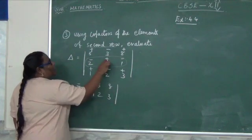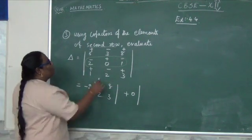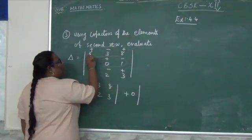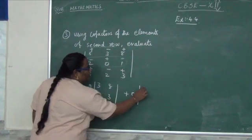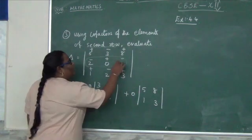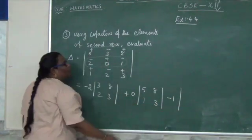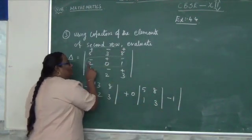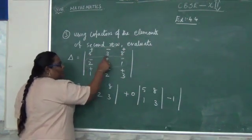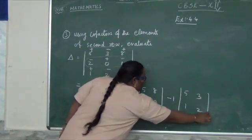Next, you come on to the next element: plus 0. The same thing — you can delete this row and column. The numbers you are having are 5, 8, 1, 3. The same way, cofactor sign minus 1 — plus into minus — minus 1 into the same thing: you can delete this row and column. The numbers you are having are 5, 3, 1, 2.